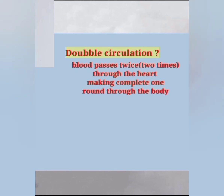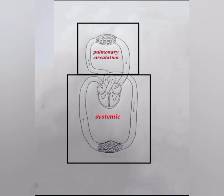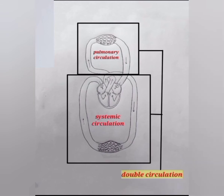This is the blood capillaries of the lungs and this is the blood capillaries of the body tissue. What exactly is meant by double circulation? It means blood passes twice through the heart, making one complete round through the body. Two circulations occur: one is the pulmonary circulation and the other is the systemic circulation, and these two form double circulation.